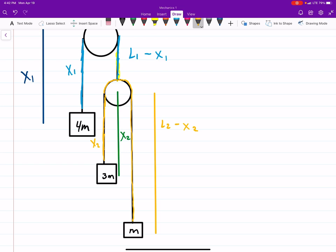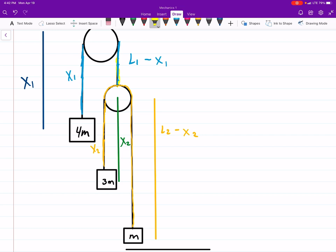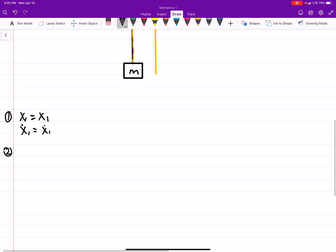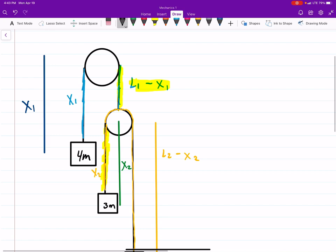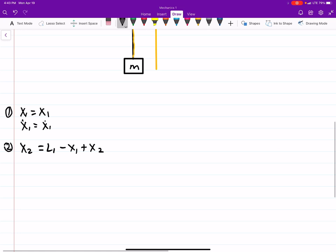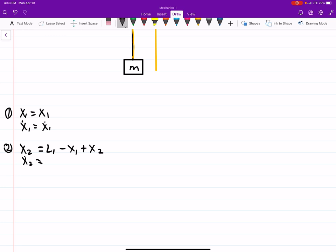So if we want the position of mass 3, we want to add, we want to take this portion plus x2. So x2 is L1 minus x1 plus x2. So we're taking that chunk, L1 minus x1, then we're adding an x2 to it. And we're going to take the derivative as well.